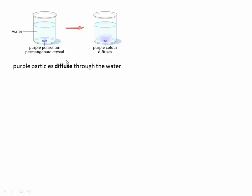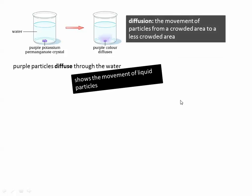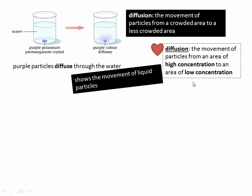Get that word down. Diffusion means particles move from a crowded area to a less crowded area. Another way to say that is instead of saying crowded to less crowded, you can say particles move from an area of high concentration to an area of low concentration. It's another way to say crowded, basically, but it's more scientific.